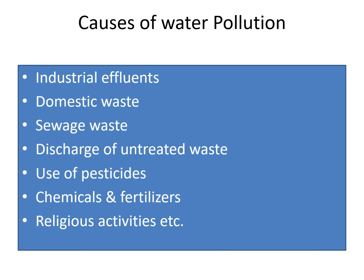Causes of water pollution: industrial effluents — industries such as tanneries, dye houses, chemical industries drain their hot and untreated water into rivers. Domestic waste and sea waste also add pollution to water. Discharge of untreated waste, use of pesticides, chemicals, weedicides, fertilizers and some religious activities are responsible for water pollution.